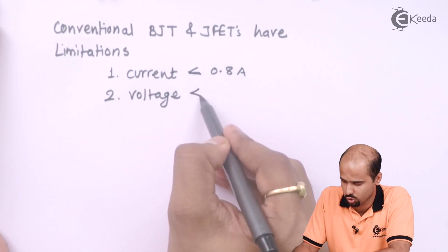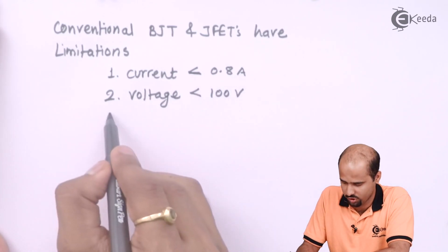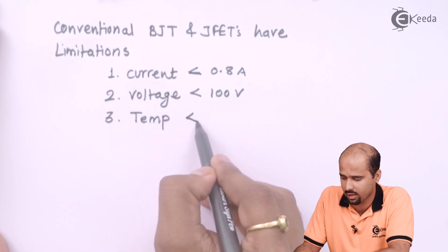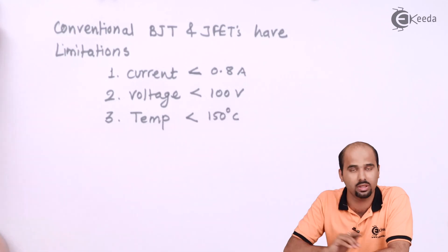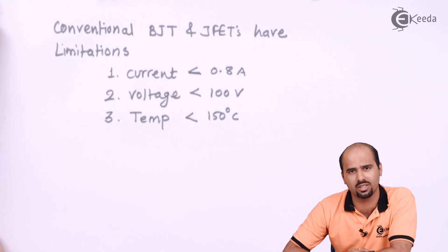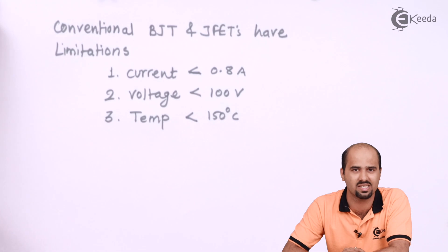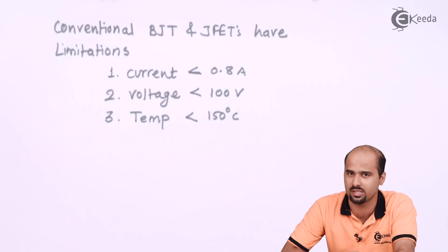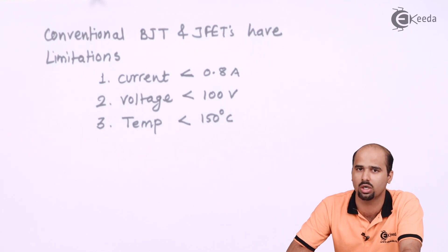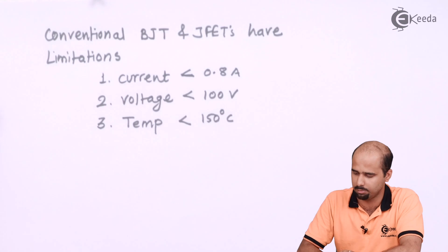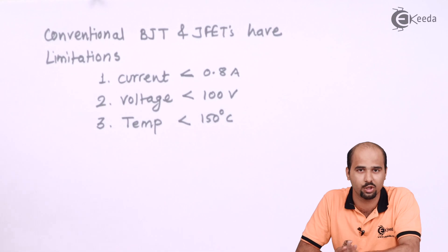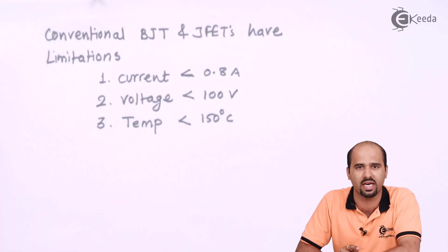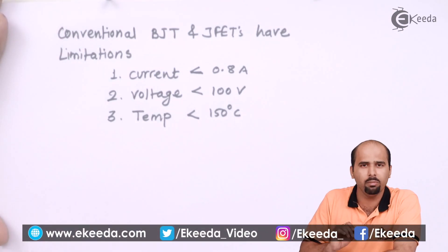Conventional BJTs can also only handle temperatures up to 150 degrees Celsius. This is because their fabrication is such that if temperature increases, minority charge carrier current increases, which causes collector current to increase, power dissipation to increase, and ultimately thermal runaway — which can damage the conventional BJT used for voltage amplification. That is why we use special power BJTs and power MOSFETs for power amplifiers.